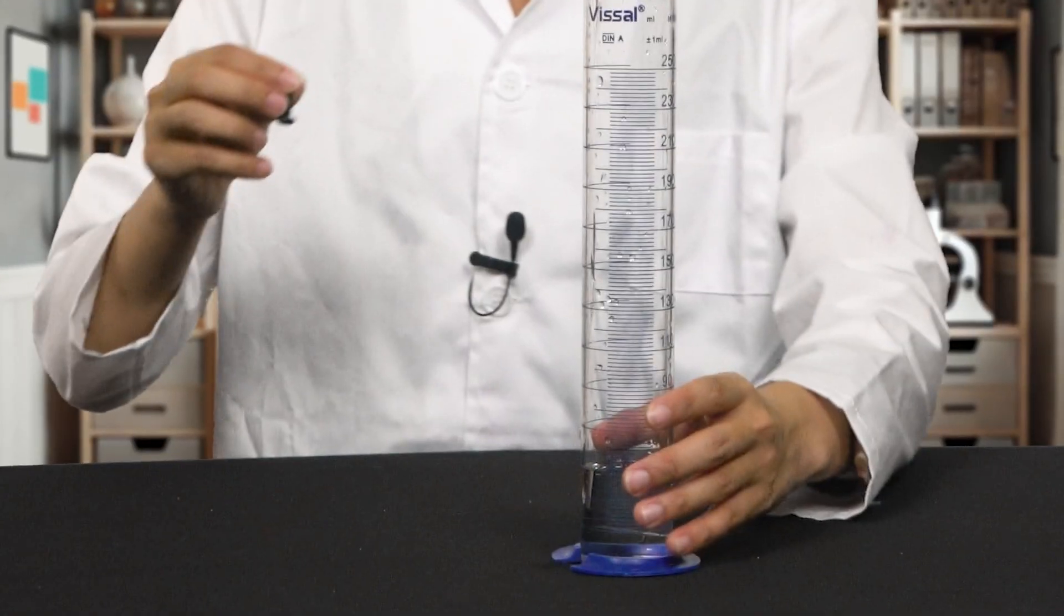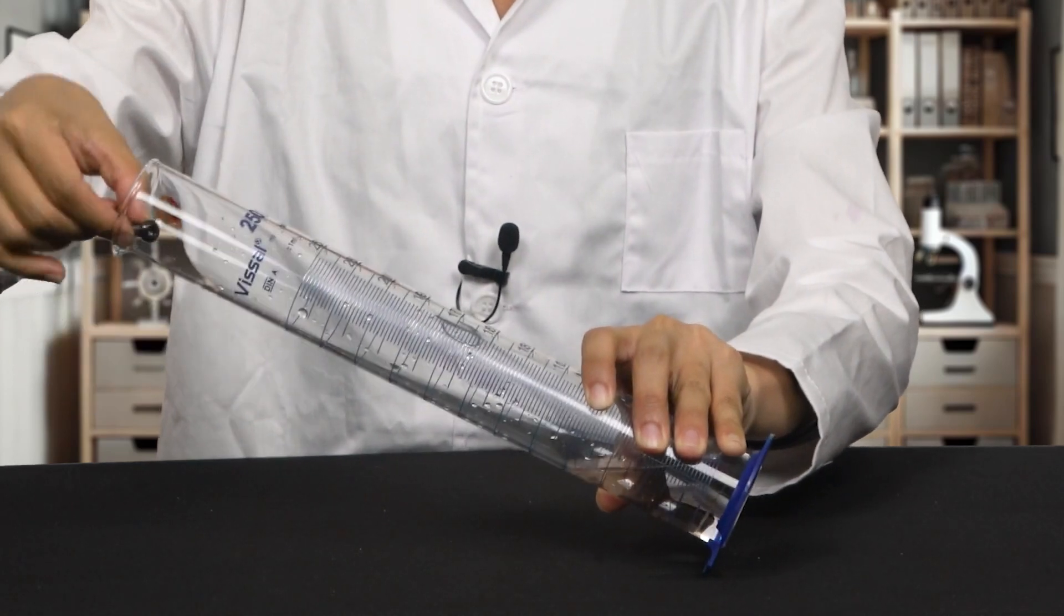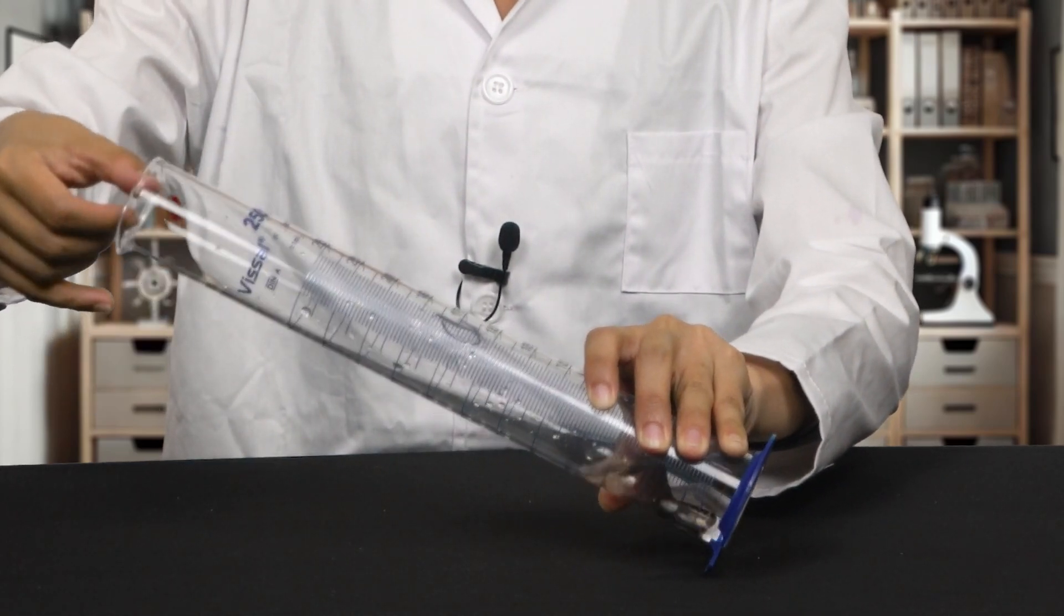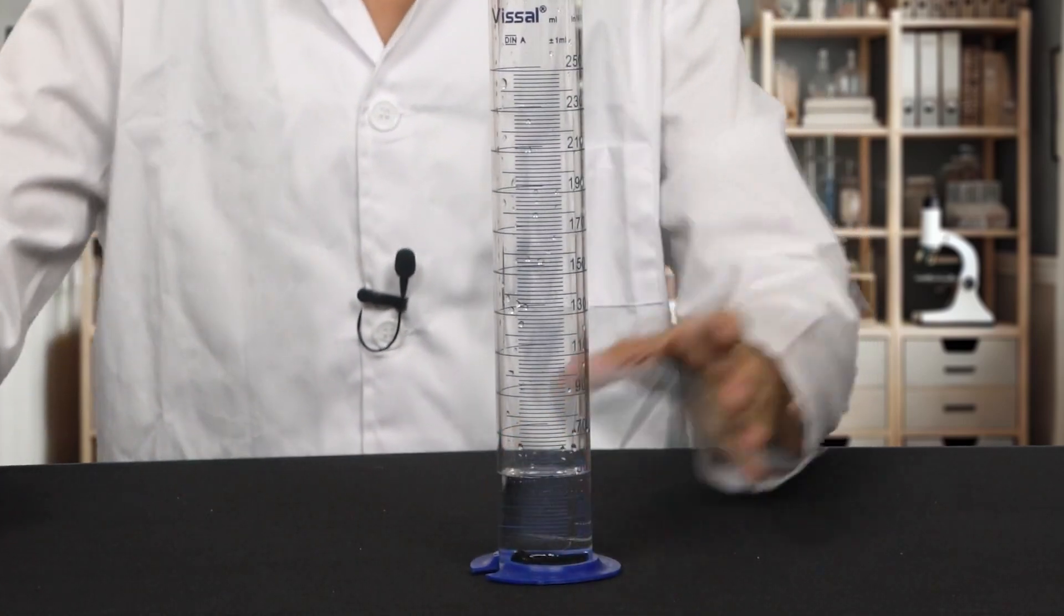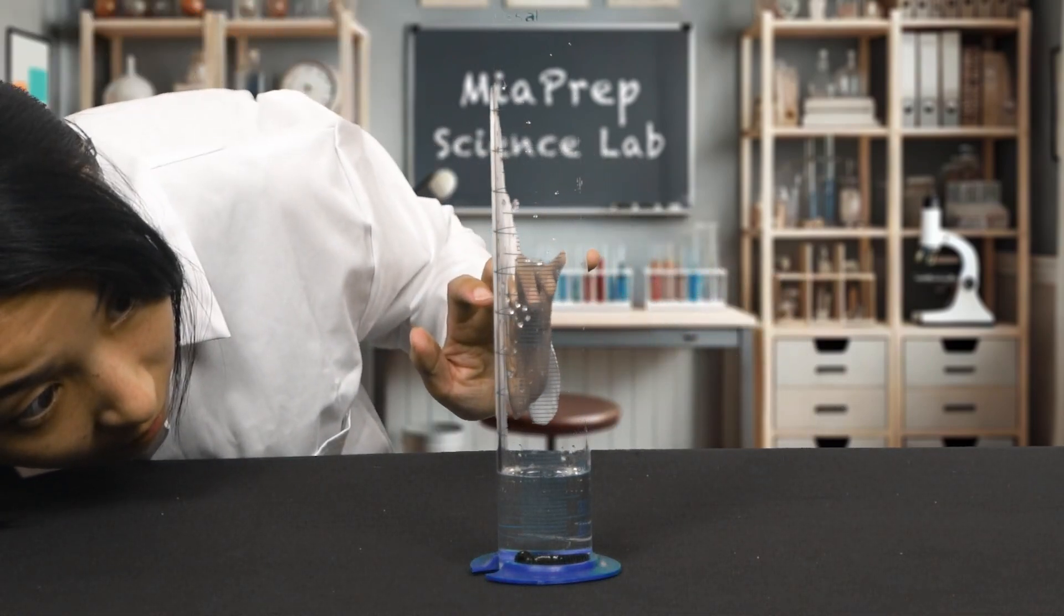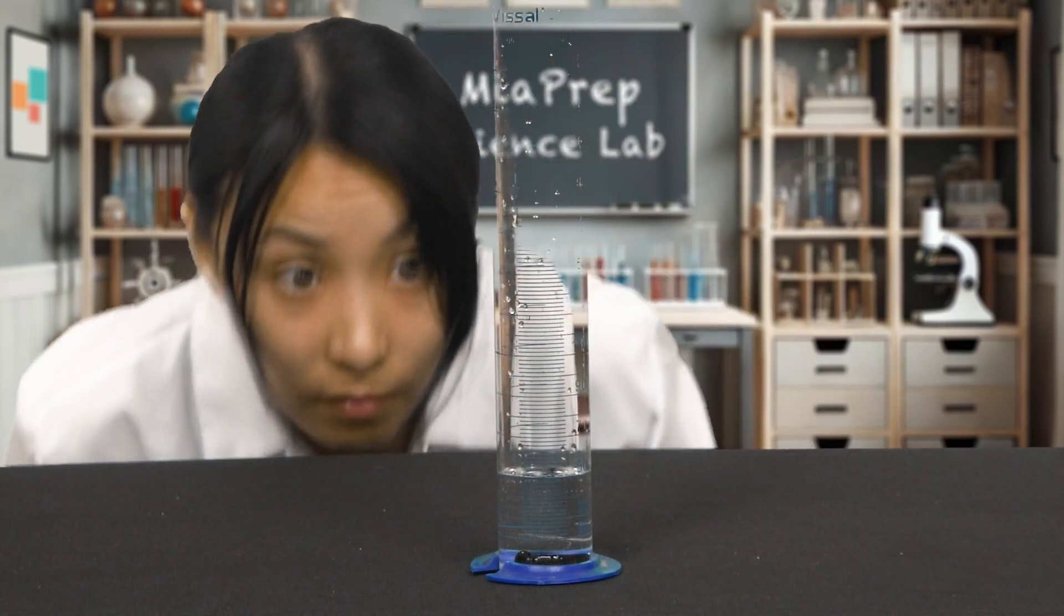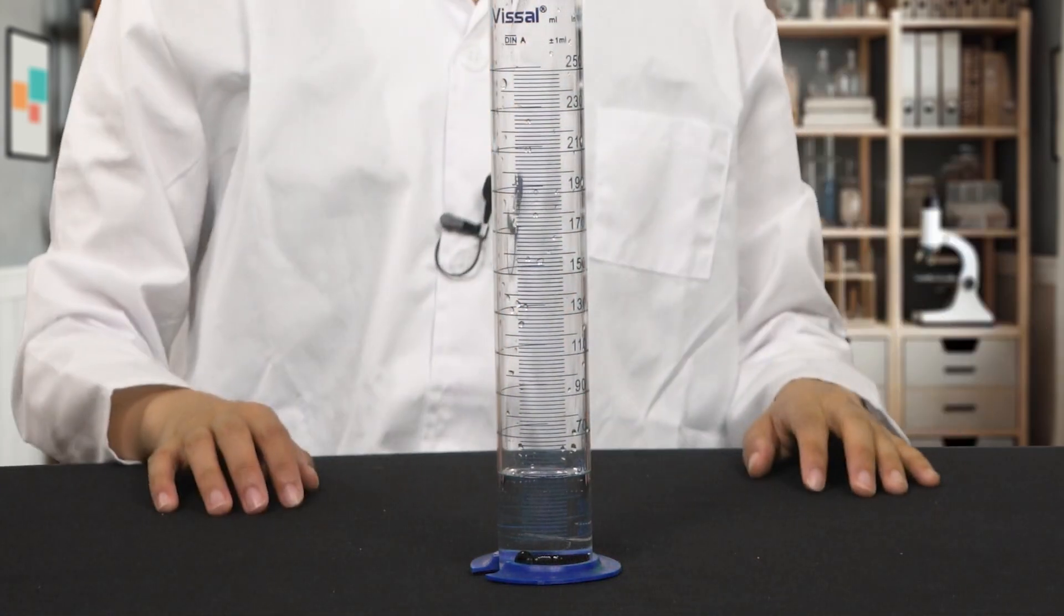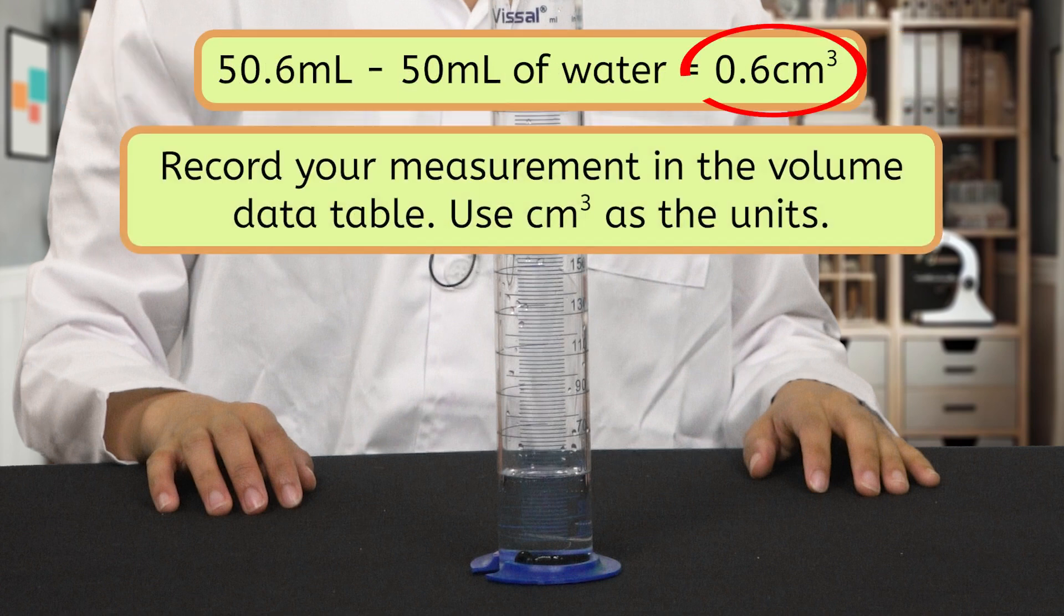Start with your graduated cylinder full of 50 milliliters of water. Tilt your graduated cylinder slowly without spilling any of the water. Then carefully place your item inside and let it gently slide to the bottom. Be careful not to let any water splash. Return your graduated cylinder to the table and look at the water line from eye level. The water level will be higher. Record the new water level after your object is fully submerged. To find the volume of the object, subtract the initial water level from the new water level. Record this number in your data table and record the units as cubic centimeters.